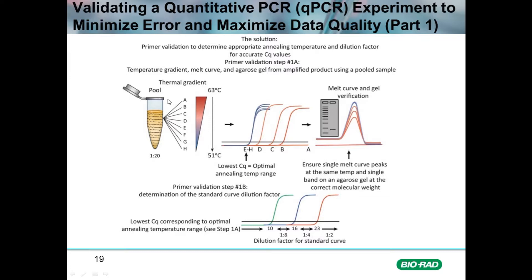The very first experiment to perform with this pooled cDNA or genomic DNA sample is a thermal gradient experiment. With BioRad CFX real-time instruments, the plate can be partitioned into eight temperatures by row, permitting in each column the ability to test one set of primer pairs at eight different temperatures.